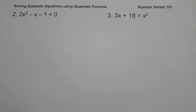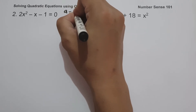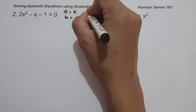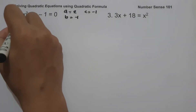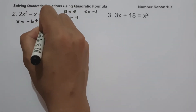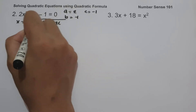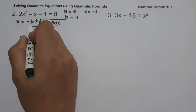On example number 2, we have 2x squared minus x minus 1 equals 0. Since the given equation is already written in standard form, we can easily identify the values of a, b, and c. So the value of a is 2, b is negative 1, and c is also negative 1. We have the quadratic formula: negative b plus or minus square root of b squared minus 4ac, all over 2a. Let us substitute the values of a, b, and c.